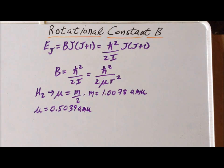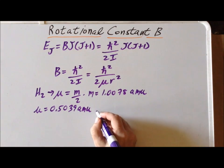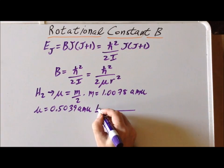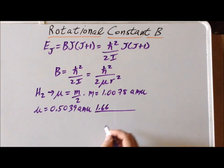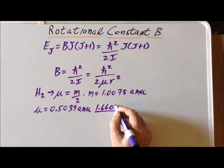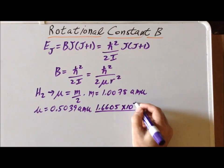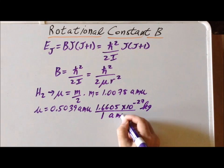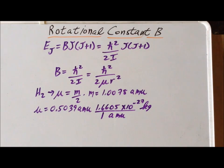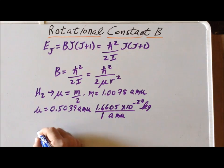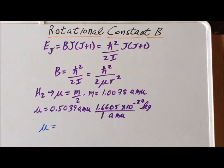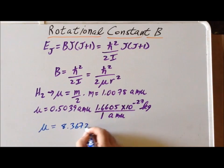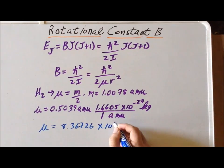Next, we want to convert from atomic mass units to kilograms. The conversion is that one atomic mass unit is equal to 1.6605 times 10 to the minus 27 kilograms. So the reduced mass of the H₂ molecule is equal to 8.36726 times 10 to the minus 28 kilograms.